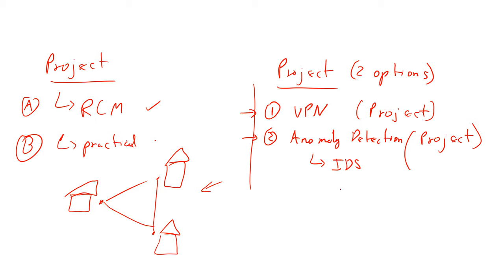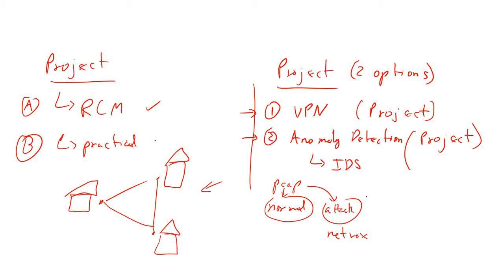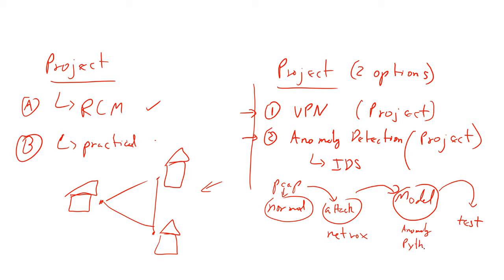With an anomaly detection system, you're going to have PCAP files — PCAP data. You're going to have normal traffic that you need to generate, and then you would have to generate attack traffic — you know how to do that with networks. Then you would have to build a model, and I'll show you guys how that can be done. Then you would test the model. So you would do some kind of project where you show: this is the data, I'm going to have normal data and attack data, we're going to use the anomaly detection technique which is like an IDS. This would be a Python coding problem, and then you would test it to see if you can detect anomalies.